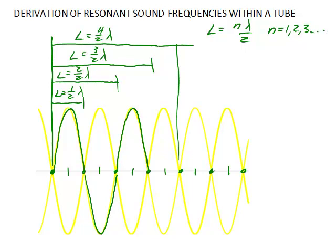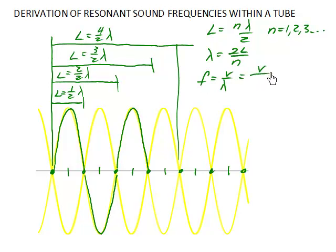In this derivation I was pretending we had different lengths of the tube, but in reality we're going to have a single length and a variety of different wavelengths. Solving for wavelength: lambda equals 2L over N. These are the various wavelengths that will exist within a tube of length L that is closed at both ends. Since it's more convenient to talk about frequencies, we solve: F = V over lambda = V over (2L/N). Flipping and multiplying gives us F = NV over 2L. This is our set of frequencies that can exist inside a tube closed at both ends.